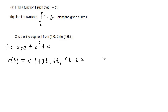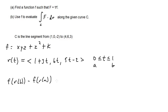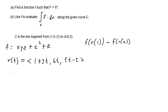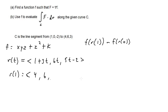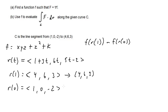Using the fundamental theorem, we compute f(r(1)) minus f(r(0)). Plugging t equals 1: r(1) equals (1 + 3, 6, 5 − 2) equals (4, 6, 3). Plugging t equals 0: r(0) equals (1, 0, −2). So we need f(4, 6, 3) minus f(1, 0, −2).